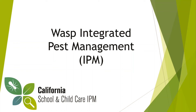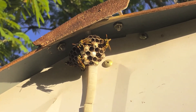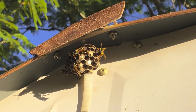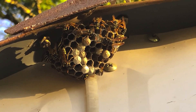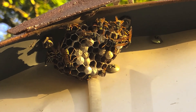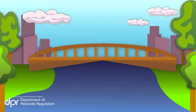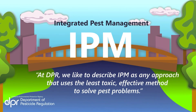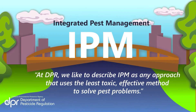Wasps are a common pest found around homes and buildings that can be successfully controlled using Integrated Pest Management strategies. If you are having issues with wasps, here's how you can use Integrated Pest Management to manage them. At DPR, we like to describe IPM as any approach that uses the least toxic effective method to solve pest problems.